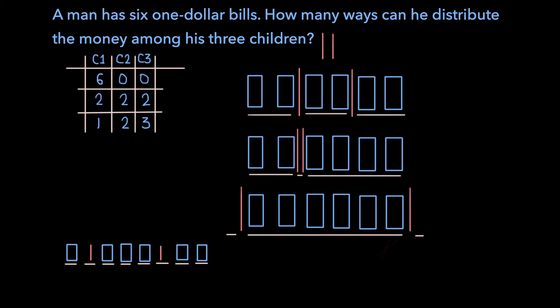And so here, we have another unique way the money can be split up. One dollar to the first child, three dollars to the second child, and two dollars to the third child. And so we can see that the placement of the dividers dictates how the money gets split up.